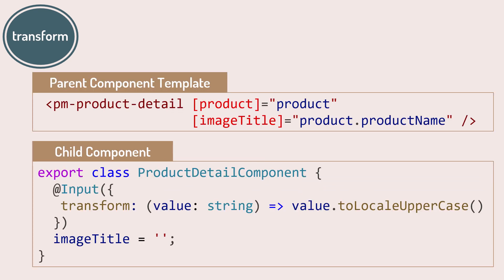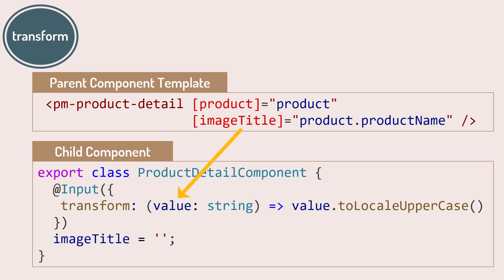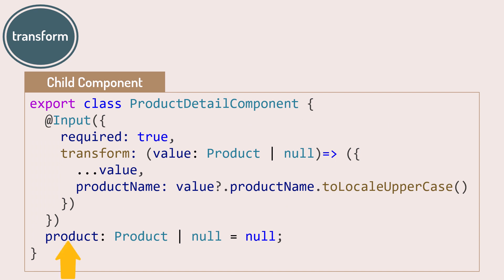Let's look at the transform option. Using transform, we define a transformation function that takes the value passed in by the parent component and modifies it for use in the child component. For example, we can take an image title string and transform it to uppercase. In another example, the child component gets product data from the parent and wants to display the product name in uppercase — we do that again with a transform function.